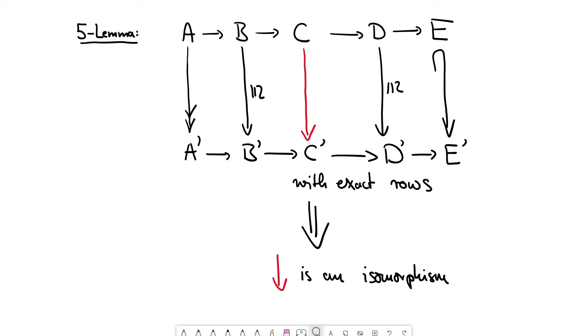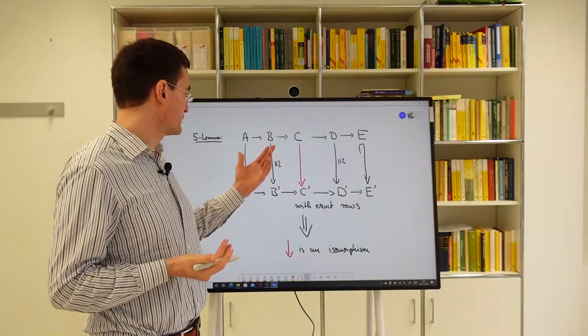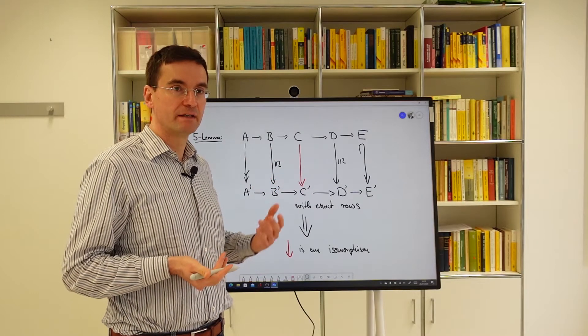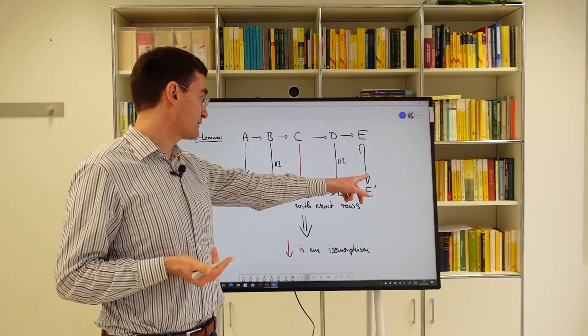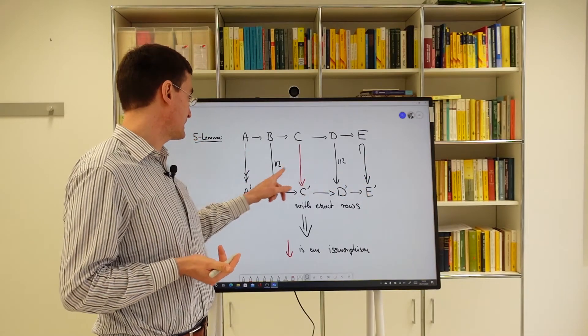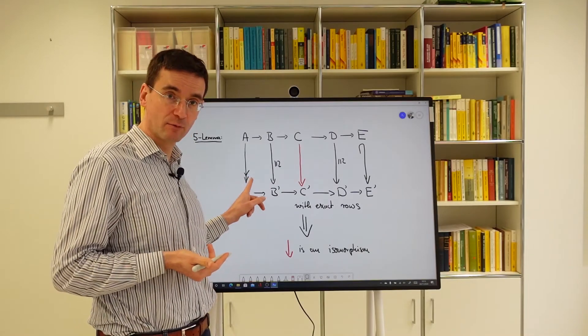And the proof of this five lemma can be divided into two parts. First part is proving the surjectivity of the red arrow. And that involves the monomorphism here and the isomorphisms, but not the epimorphism.